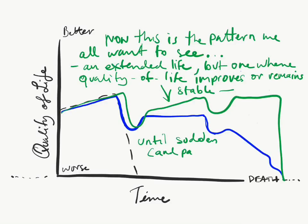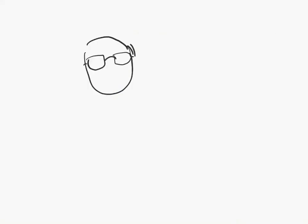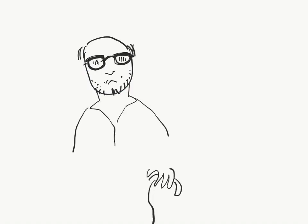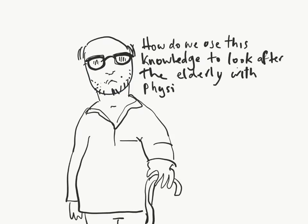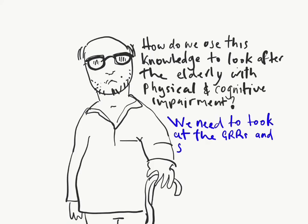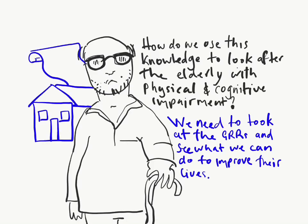So now we know what salutogenesis is, but how do we use this knowledge to design buildings, to conceive models of care, to look after people who are old and have severe cognitive impairment? We have to look at generalized resistance resources to see how meaningfulness, comprehensibility and manageability can be optimized and even maximized, using a broad range of approaches and given the particular difficulties around dementia.